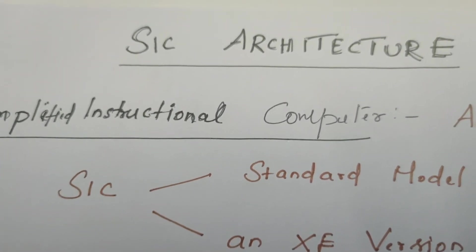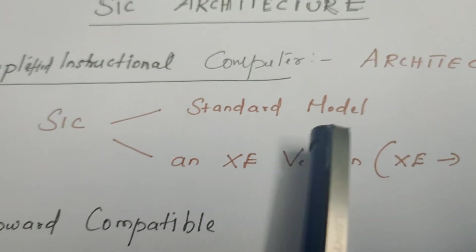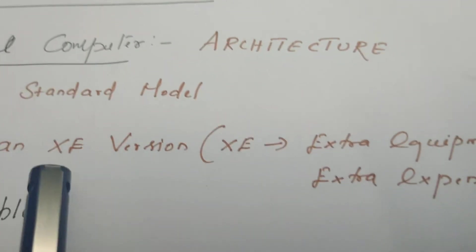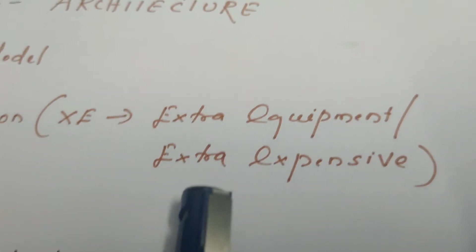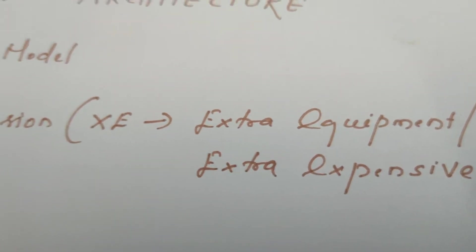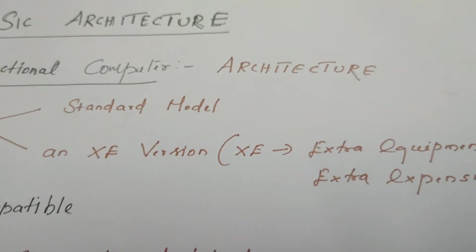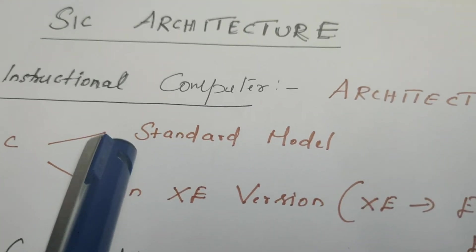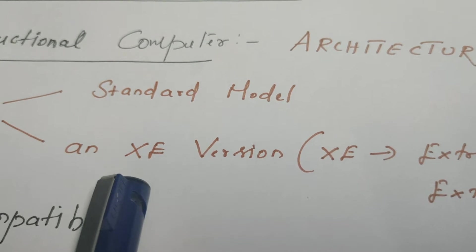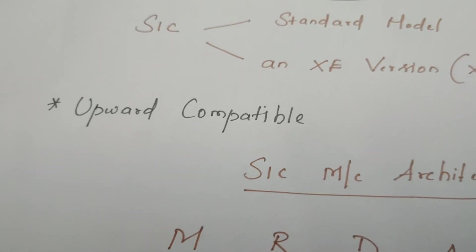SIC comes in two versions: one is the standard model and another is the XC version — the extended version. XC can be called extra equipment or extra expensive. We are going to concentrate on the standard model. SIC versions are upward compatible, meaning programs written for the standard model can also be executed on the extended version.